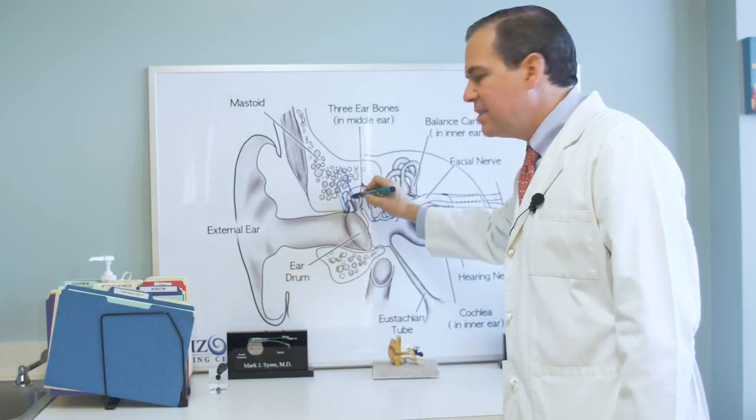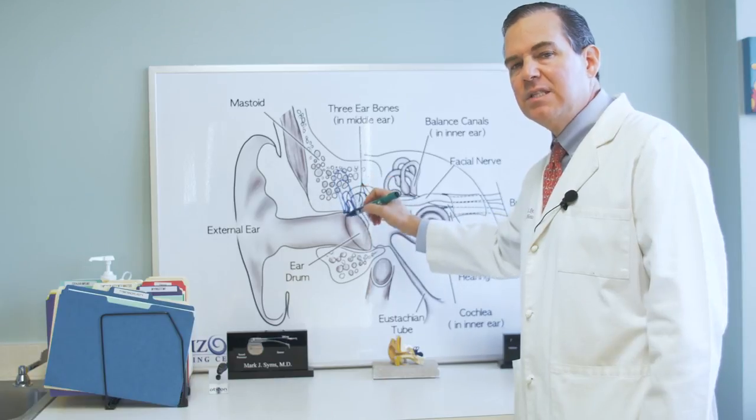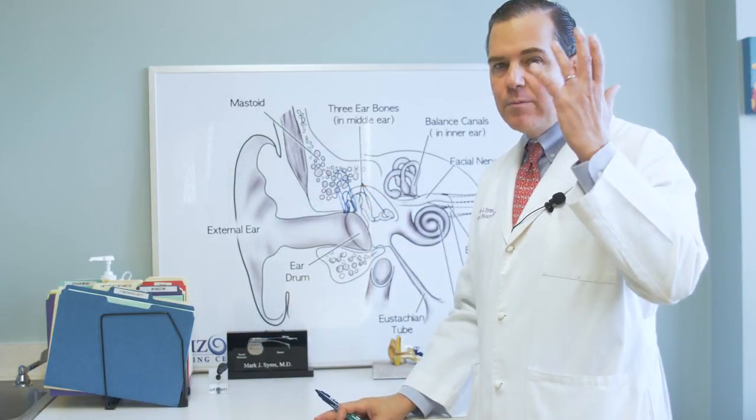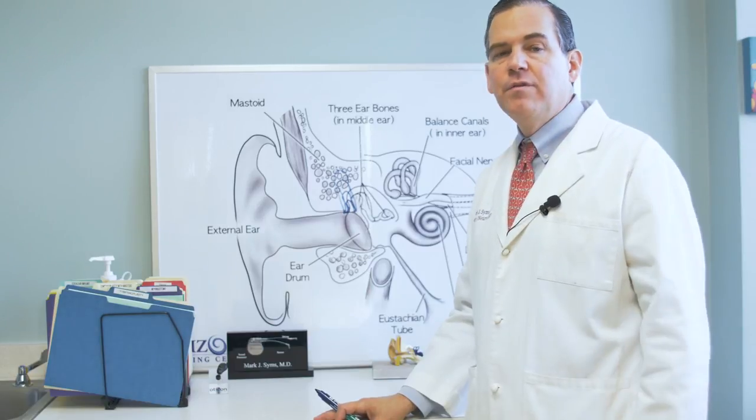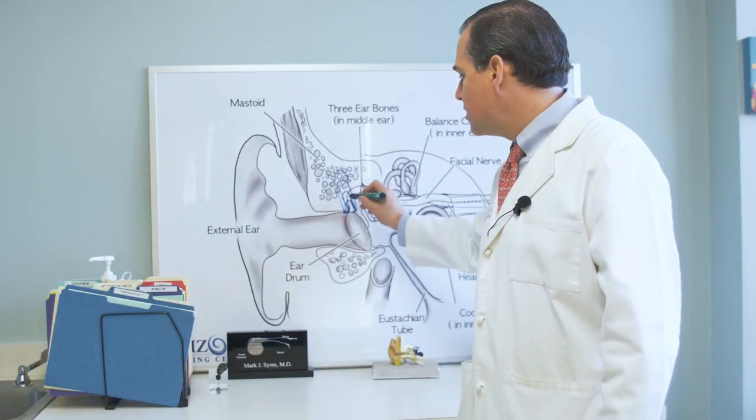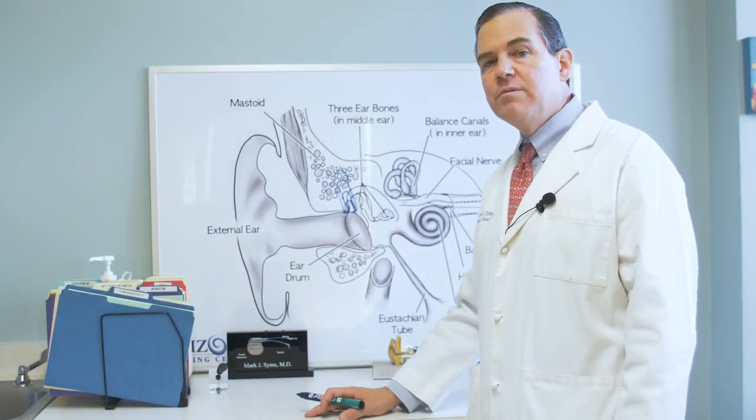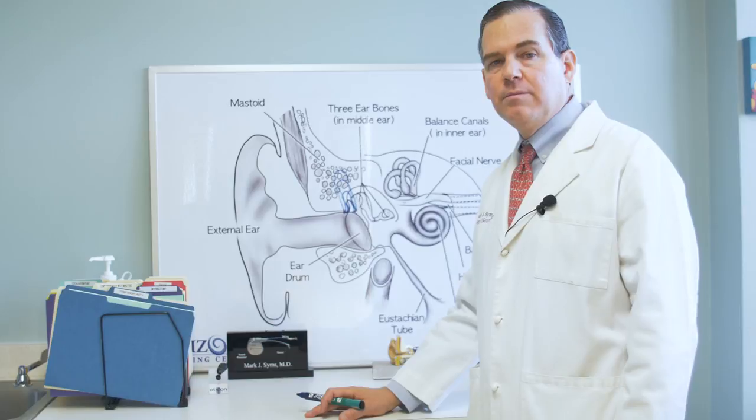So the inside of this area that is sucked in is lined with skin. Skin everywhere in your body sheds. On your head, we call it dandruff. It falls off the rest of your body. In your ear, when you get a cyst or this little sucked in area of your eardrum filled with dead skin, it is a cholesteatoma.